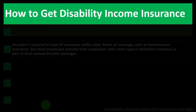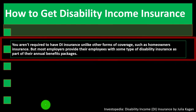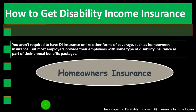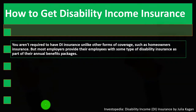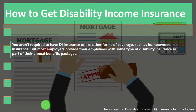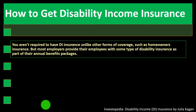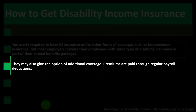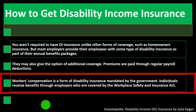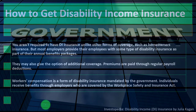You aren't required to have DI disability income insurance unlike other forms of coverage such as homeowners insurance. However, most employers provide their employees with some type of disability insurance as part of their annual benefits package and may offer the option of additional coverage; premiums are paid through regular payroll deductions. Workers' compensation is a form of disability insurance mandated by the government — a kind of government-mandated disability insurance.